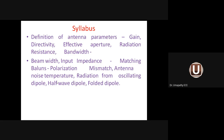Polarization means the orientation of either the electric field or magnetic field in the direction of propagation, along a straight line, circle, or ellipse. Based on this, we classify polarization into three types: linear polarization (divided into vertical and horizontal), circular polarization, and elliptical polarization.